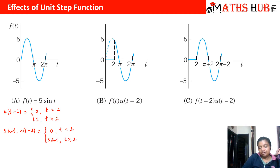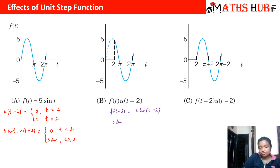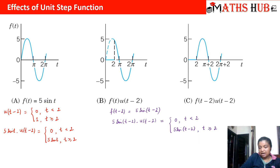Now let us see what happens if we also shift the function argument to t minus 2 and then multiply with the unit step function. f(t) = 5 sin(t), so f(t minus 2) = 5 sin(t minus 2). When we multiply 5 sin(t minus 2) with the unit step function, the function moves to the right by 2 units. The product becomes 0 when t is less than 2, and 5 sin(t minus 2) when t is greater than or equal to 2.